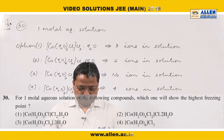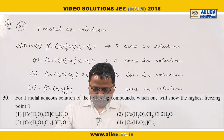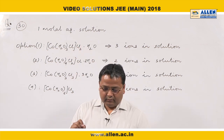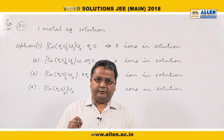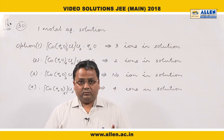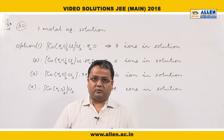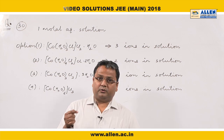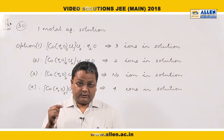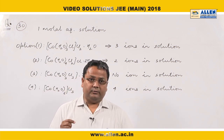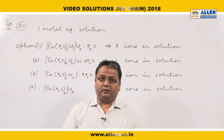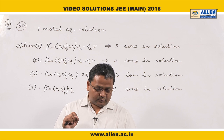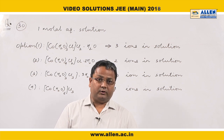Question number 30. For a one molal aqueous solution of the following compounds, we have to identify the compound having the highest freezing point. As we know, the depression in freezing point is a colligative property, meaning species giving a larger number of particles in solution will have greater depression in freezing point, and hence a lower freezing point. So for maximum freezing point, the number of particles in solution must be minimum.